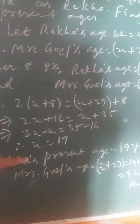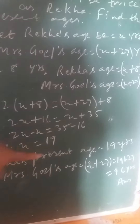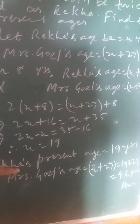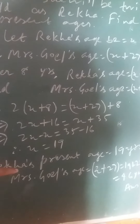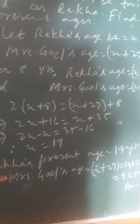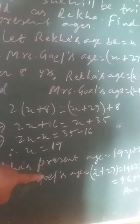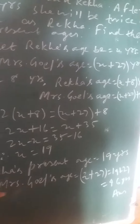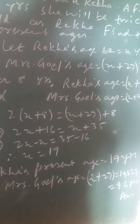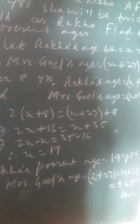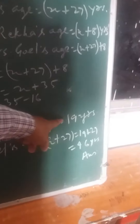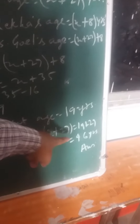So Rekha's age is 19 years, because her age was X years. And Mrs. Goyal's age will be X plus 27, equal to 19 plus 27, which is 46 years. The answer is 19 years and 46 years.